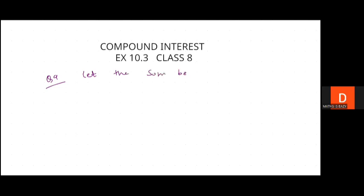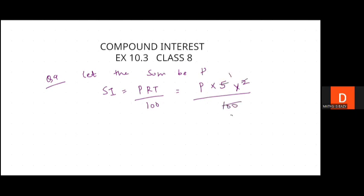Simple interest = PRT/100. So it will be P × 5 × 2 / 100. Solving this, simple interest comes out to be P/10.